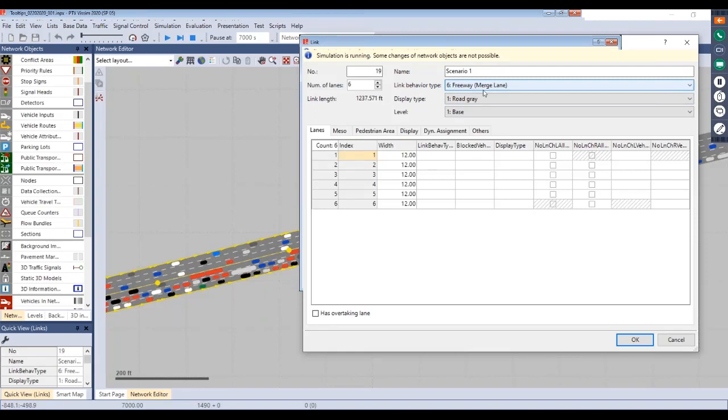On our merge area here, you can see for scenario one, we just have the default link behavior type set to freeway, and then we didn't apply any different behaviors to any of the lanes. So they'll all just reference that base freeway link behavior type.